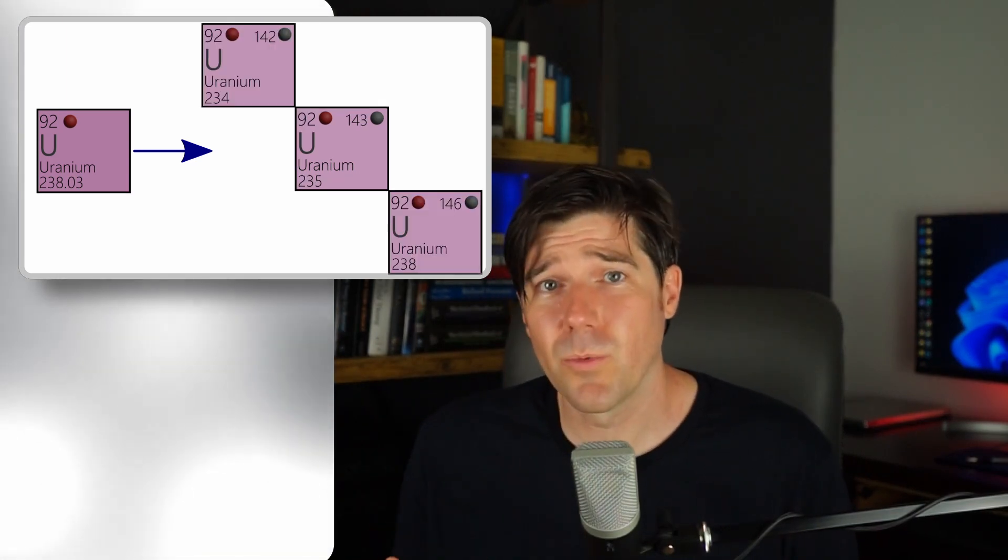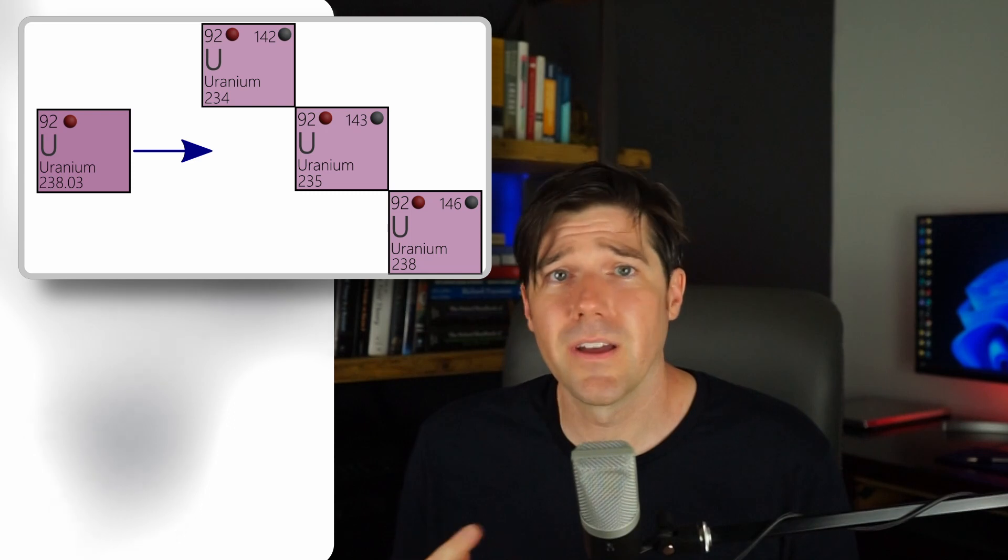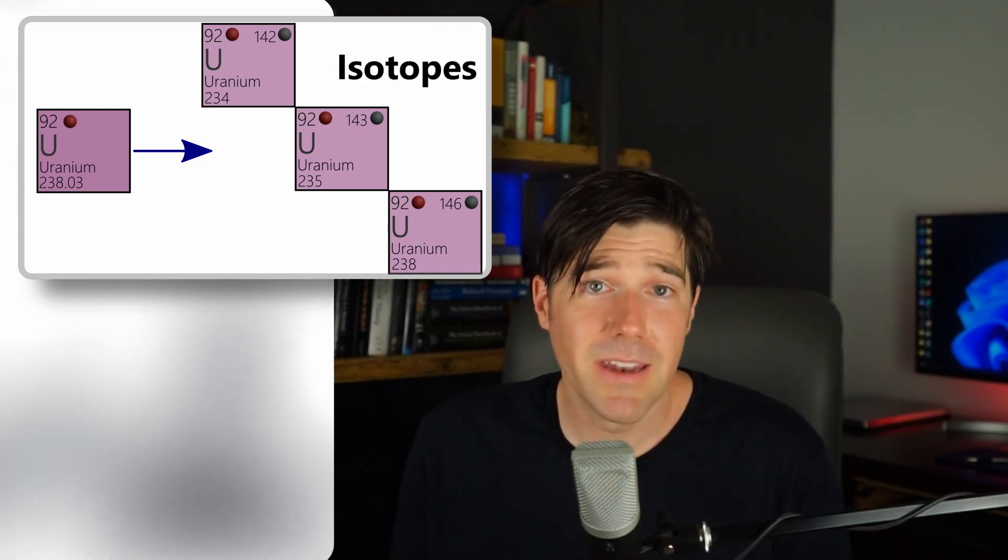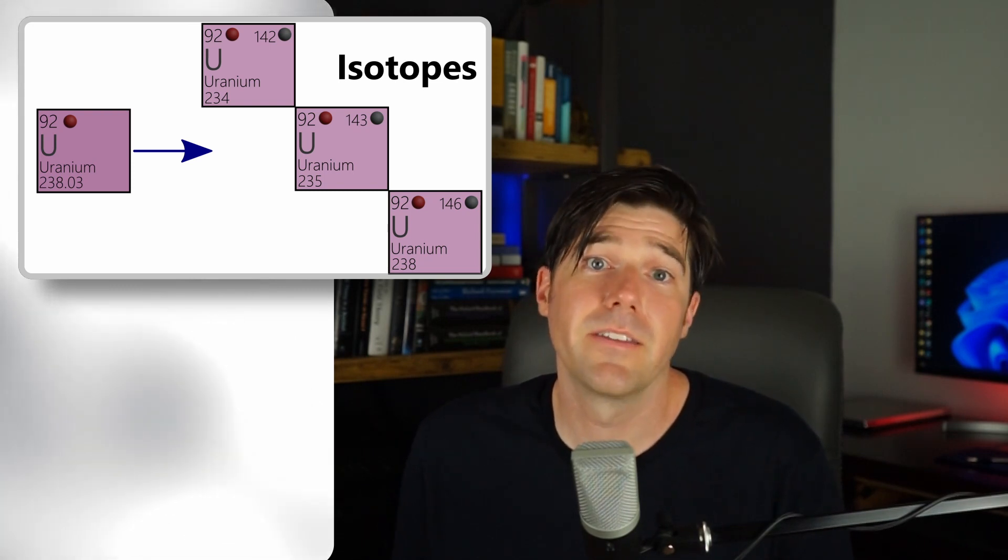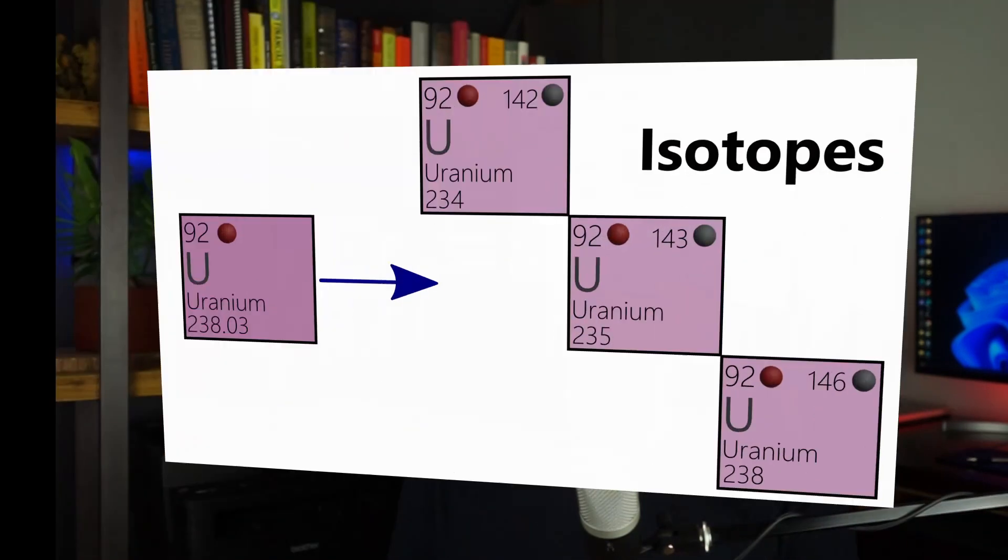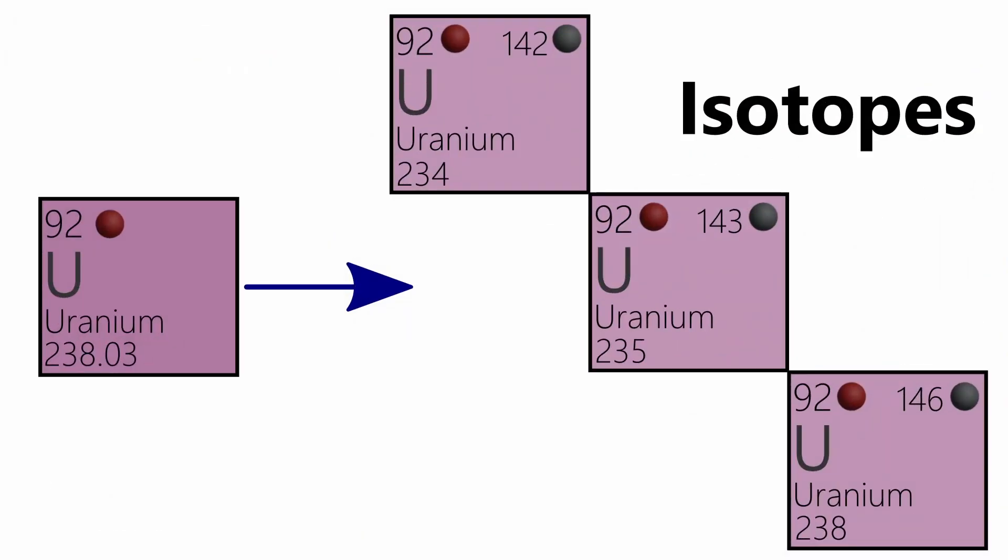Two or more versions of the same element with different neutron numbers are called isotopes. To distinguish between an element's various isotopes, the common naming convention is to specify the element's symbol followed by the isotope's mass number. For instance, the element uranium has the atomic symbol U and has an atomic number of 92. The three most common isotopes of uranium on Earth contain either 146, 143, or 142 neutrons. Hence, they would be named as U-238, U-235, and U-234.